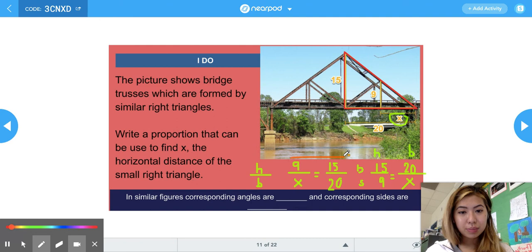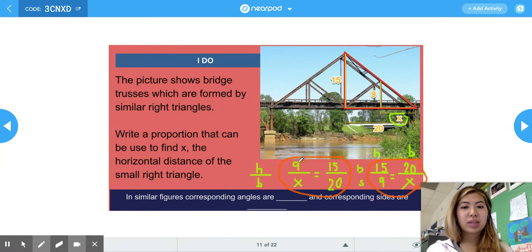So these are just two examples of proportions that can be made, but these numbers can also be flipped. So it could have been x over 9 is equal to 20 over 15, as well as 9 over 15 is equal to x over 20.